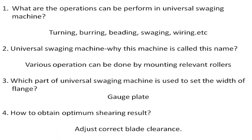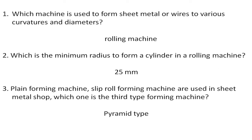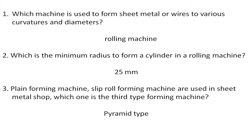Let's look at the objective questions of the Universal Swaging Machine. Which machine is used to form sheet metal or wire to various curvatures and diameters? The rolling machine is used to form sheet metal and wire to various curvatures and diameters. The minimum radius to form a cylinder in a roll forming machine is 25 mm.